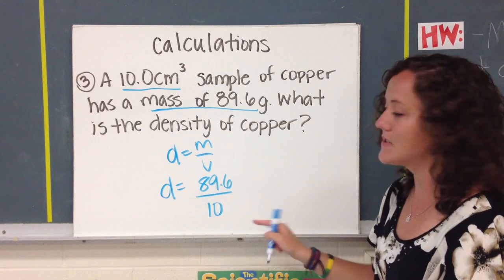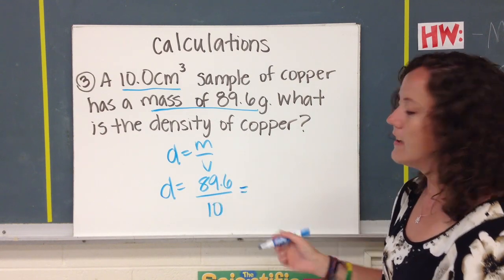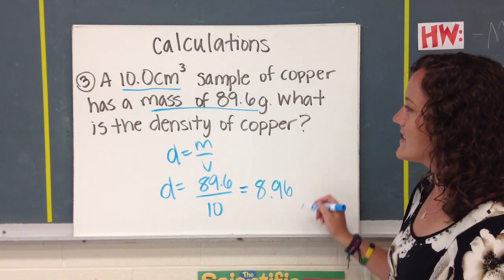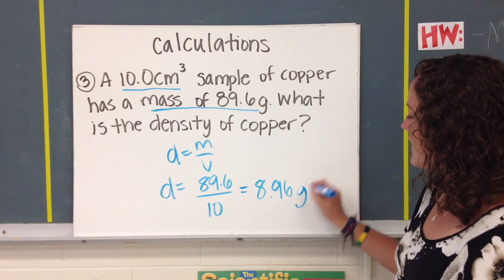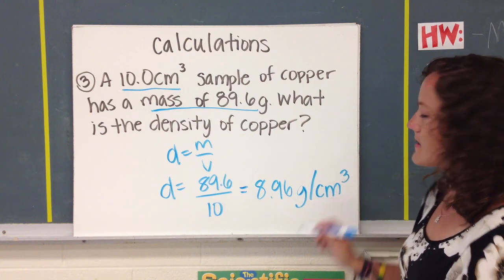Again, we're dividing by a multiple of 10. There's one zero, so I can just move the decimal back one space. If you want to use a calculator, you can. So our density of the copper sample is 8.96 grams per centimeters cubed, because copper is a solid.